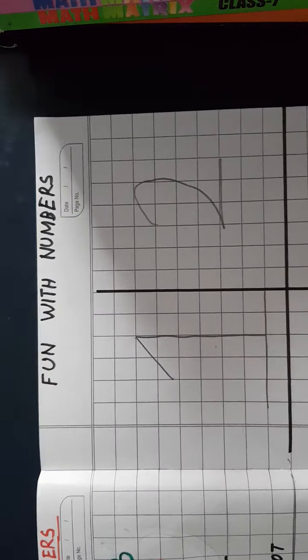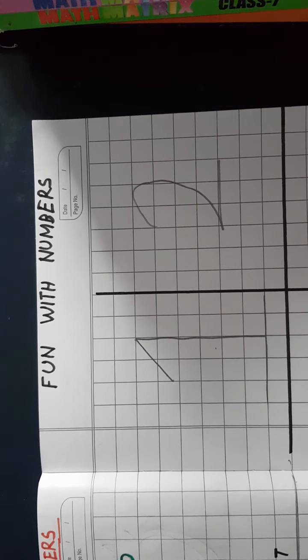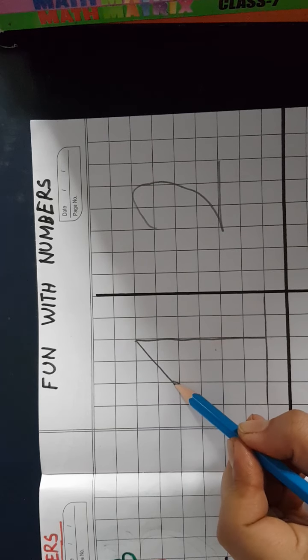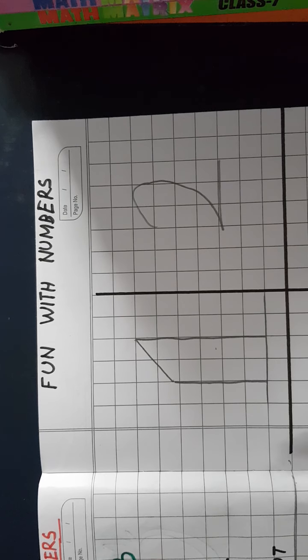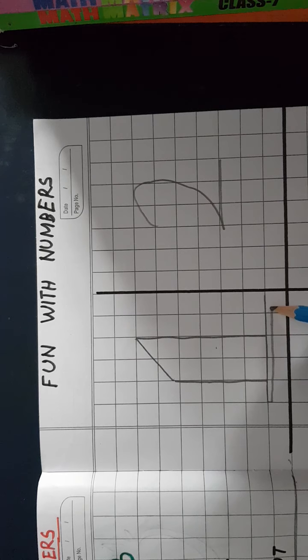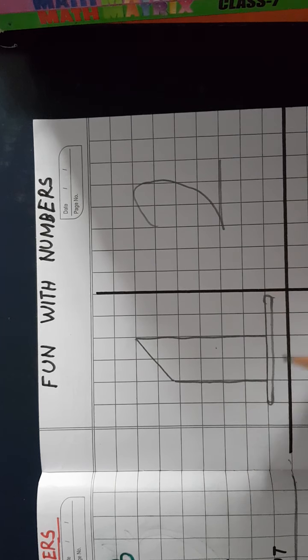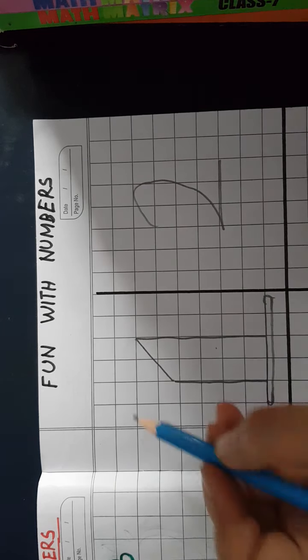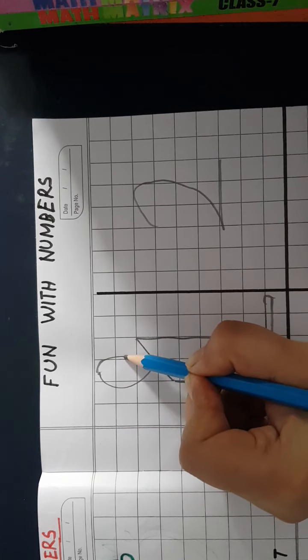Ab main aapko dikhaungi ki hum number 1 se kaise ek sundar sa candle draw kar sakte hain. Dekhiye, ye jo slanting line hai yahan pe aayi hai, isko hum dobara se, iske base se, mila denge. Right? Iske baad mein, is vertical line ko hum double kar lenge. Iske baad mein, upar hum kya karenge? Upar hum ek C draw karenge, aur ulta C draw kar denge.